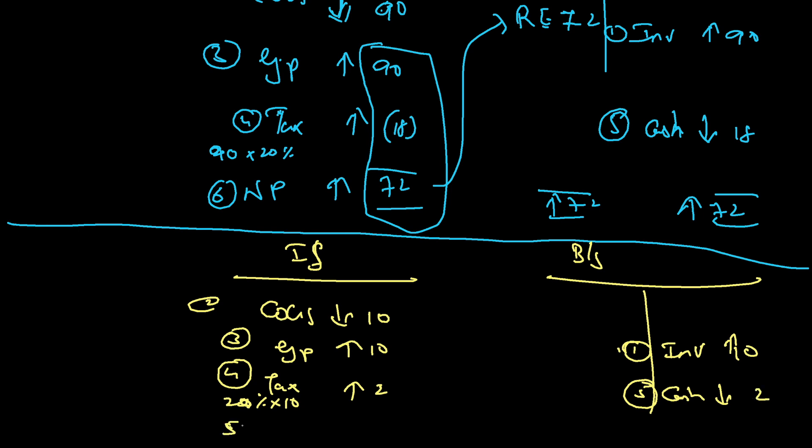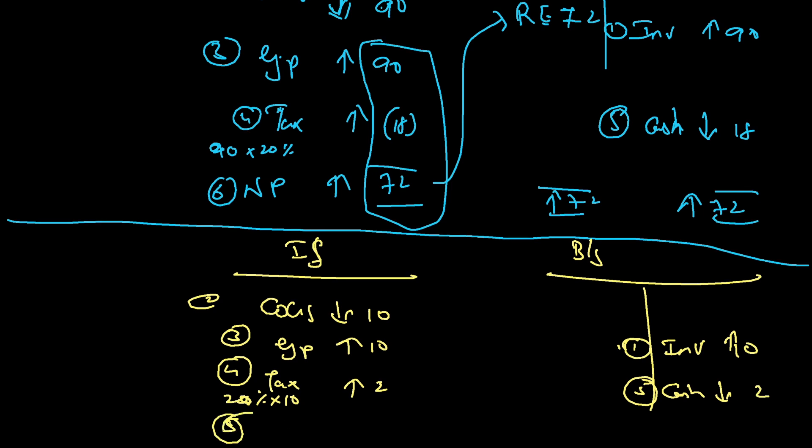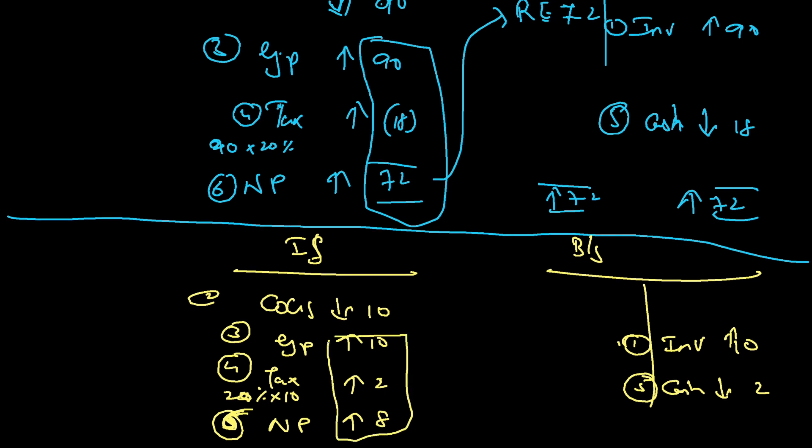Sixth step: overall my net profit will go up by 8. 10 minus 2 equals 8. This I will push to retained earnings; it will go up by 8.